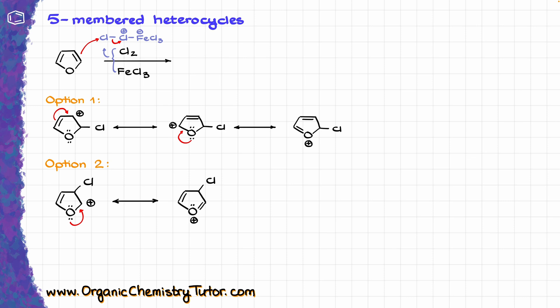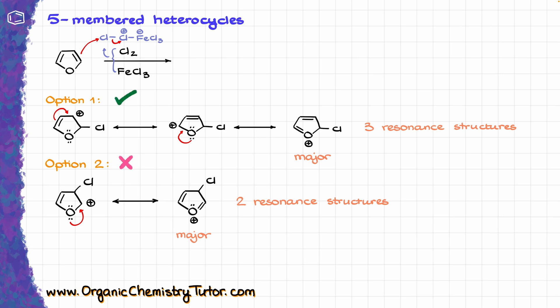Analyzing both sets of resonance contributors, I see that the major contributor in the first case is the one with the plus on the oxygen, because we have a full octet there. Likewise, for the bottom set, the major contributor is also the one with the plus on the oxygen, again due to the complete full octet. The important distinction is that in the first case I have three resonance structures, while in the second set I only have two reasonable resonance structures. This means option one is the more stable intermediate, and so the final product in this reaction is going to be the molecule with chlorine placed next to the heteroatom.